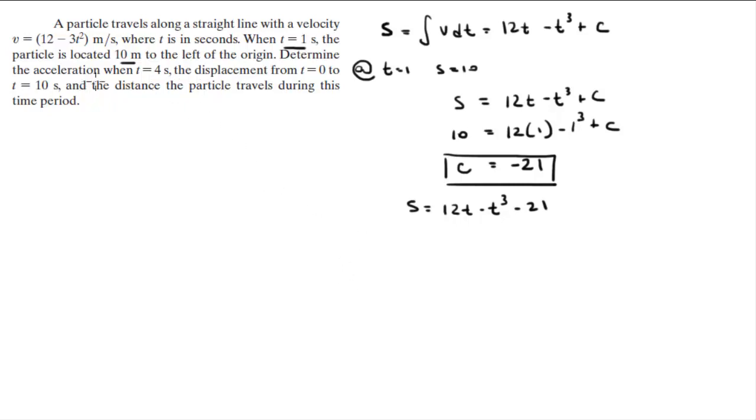Now, determine the acceleration when t is equal to 4 seconds. The acceleration is given by the derivative of the velocity, which is minus 6t. So a when t equals 4 is minus 6 times 4, which is equal to negative 24 meters per second squared. So that's the first one.